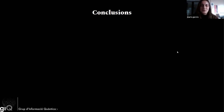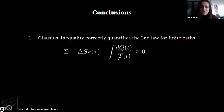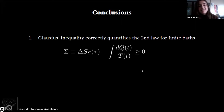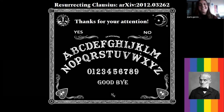In conclusion: the first message is that Clausius inequality correctly quantifies the second law of thermodynamics for finite baths, where the effective temperature is defined by imposing that the mean energy of the bath equals what it would have had it been in equilibrium. The second conclusion is that, thanks to this, non-equilibrium processes are actually less irreversible than previously thought. Thank you for listening.